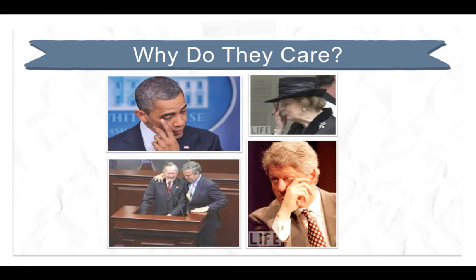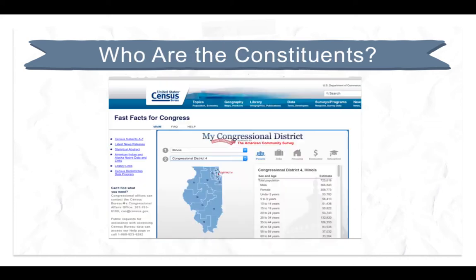Say you're considering contacting a potential leader or important decision maker about your issue. What should you know about them going in to be truly effective? Why specifically should this person care or be moved by your issue? What makes Bill Clinton cry? What makes Margaret Thatcher cry? What makes President Obama cry? What makes George Bush cry — both George Bushes? If this is an elected official, who are their constituents? What are the cultural and economic demographics of their district?